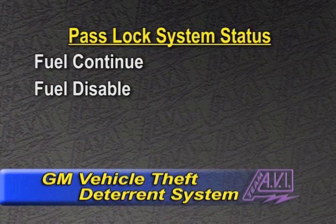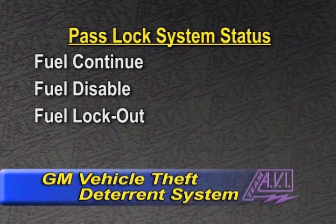Any additional key attempts to start the vehicle during that lockout period will result in no injector pulses — it won't even start. You will get a start on the initial key cycle, but if it goes into fuel disable mode, any key cycle attempts within those 10 minutes will have no injector pulses. That's what we call the fuel disable mode, or fuel lockout mode — the 10-minute lockout mode.